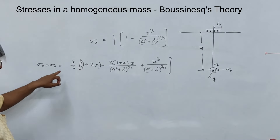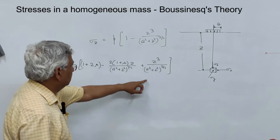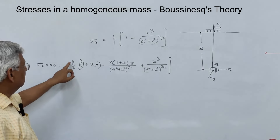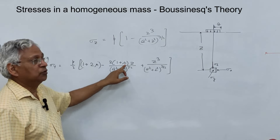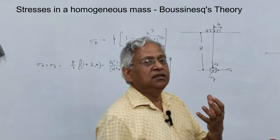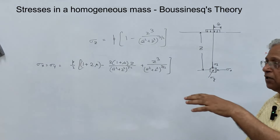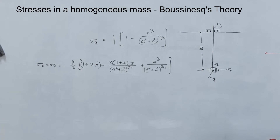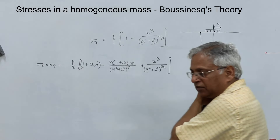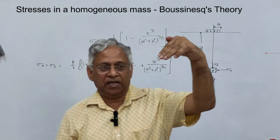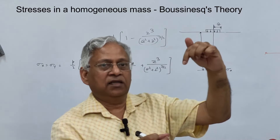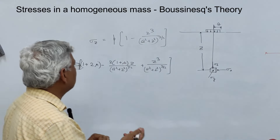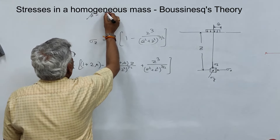Sigma X and sigma Y are equal and can be estimated using the corresponding Boussinesq equation. The parameters needed are: small p (the pressure), A (the radius of the loaded area), and mu (the Poisson's ratio). Poisson's ratio is the ratio of horizontal strain to vertical strain when a vertical load is applied. In the case of soil, this Poisson's ratio mu can be taken as 0.5.